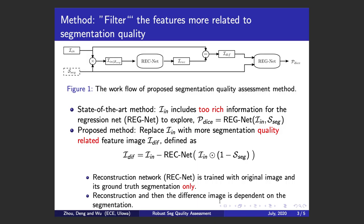We propose to replace the input image with a more segmentation quality-related feature image, which we call the difference image. This is defined as the difference between the input image and a reconstructed image conditioned on the segmentation quality. We want our reconstruction network to only reconstruct the image well if the input segmentation quality is very high, so we train our reconstruction network with this objective.